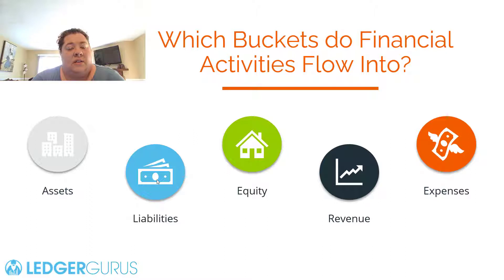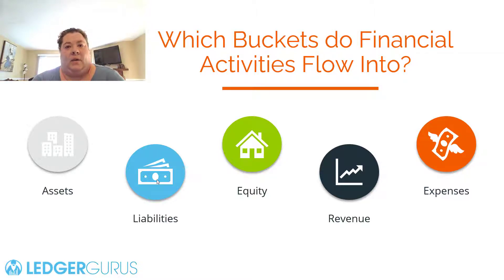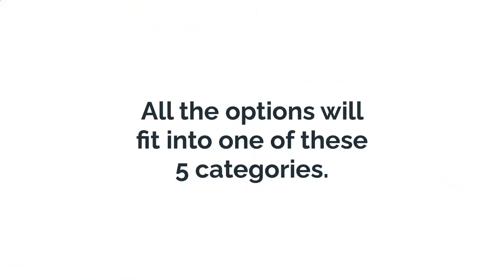The first thing you need to know when setting up a chart of accounts is that there are five major types of accounts: assets, liabilities, equity, revenue, and expenses. When you're actually in QuickBooks setting up your chart of accounts, it gives you a lot more options than that — for example, bank account, credit card, short-term loan, long-term liability, current assets. Even though it gives you a lot more options, every single one of those still falls into one of those five major categories.